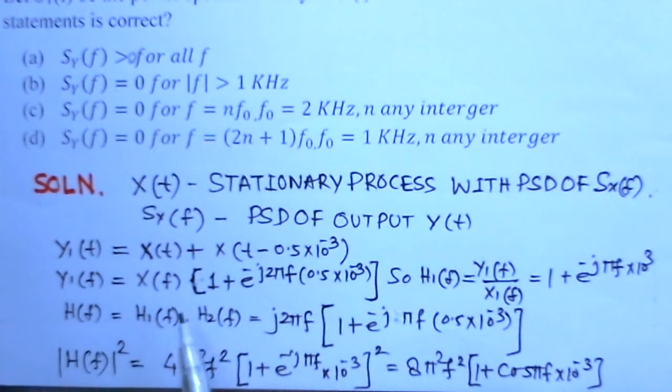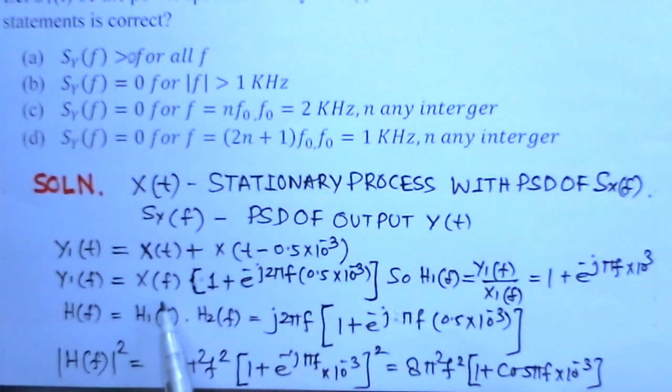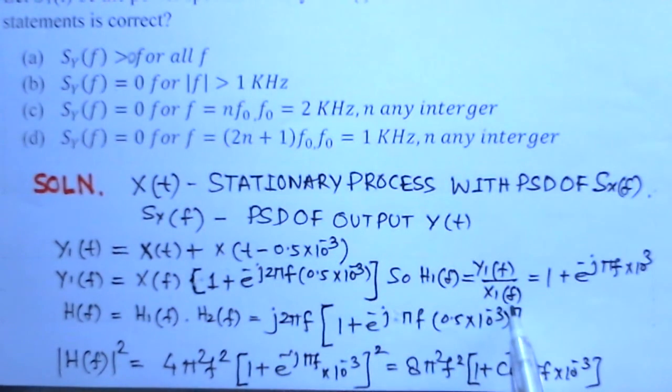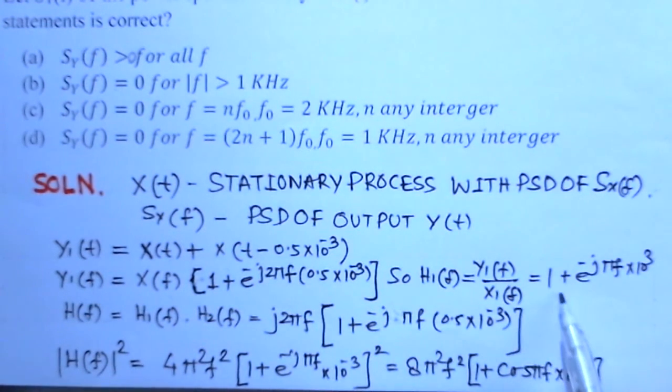We can write Y1(t) in the frequency domain as X(t) times 1 plus e to the power minus j pi f times 10 to the power minus 3.